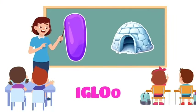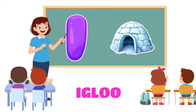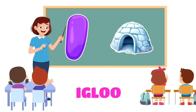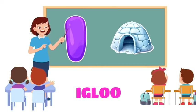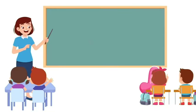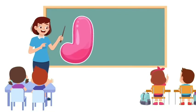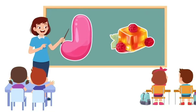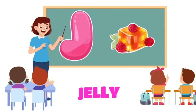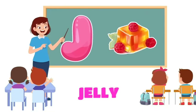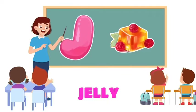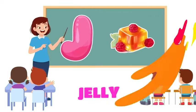I is for Igloo. I, igloo. I, igloo. I, igloo. J is for Jelly. J, g, jelly. J, g, jelly. J, jelly.